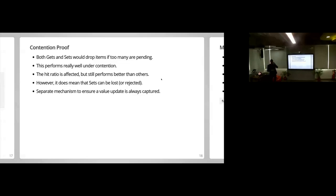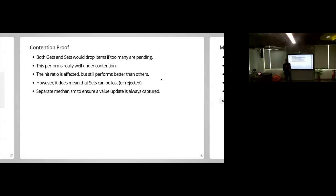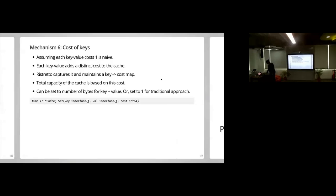Regarding stale values — we are adding a mechanism that will be a one-line change: 'update if present.' When you call set, it will quickly check the cache's map for that shard. If the key already exists there, it will update it and return immediately, without needing to put it in the set buffer. That way we ensure that if a key already exists, we handle it immediately.